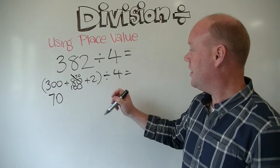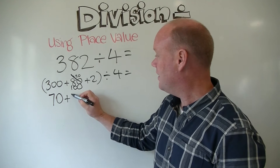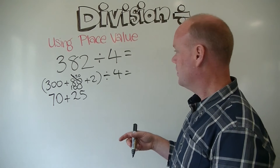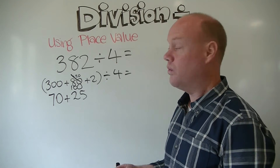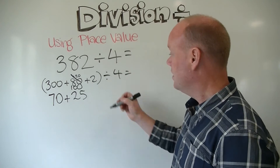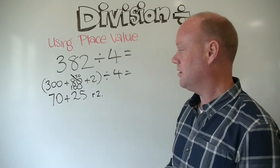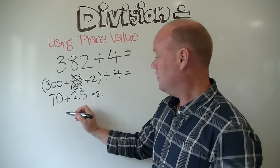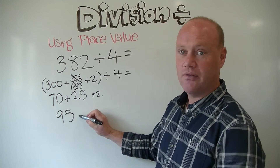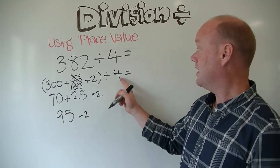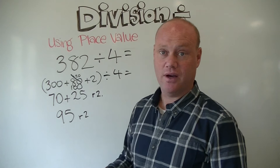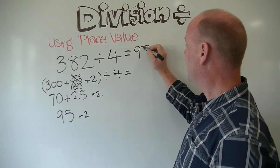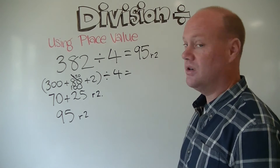So 100 divided by 4 is 25. And 2 divided by 4 doesn't give a whole number, so I'll leave that as remainder 2. Adding my parts together: 70 plus 25 is 95, with remainder 2. Because we're dealing with 4, it would also be 95 and a half. So the answer to 382 divided by 4 is 95 remainder 2, or 95 and a half.